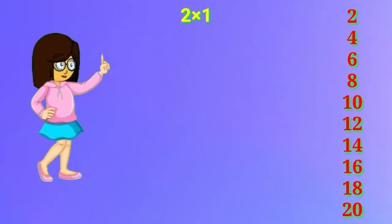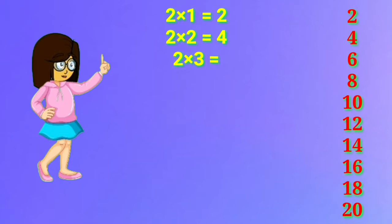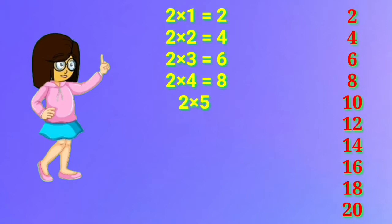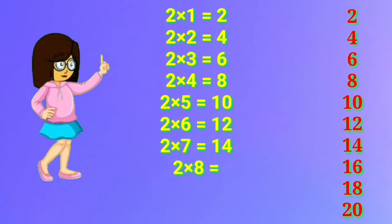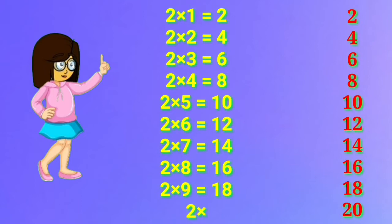2 one's are 2. 2 two's are 4. 2 three's are 6. 2 four's are 8. 2 five's are 10. 2 six's are 12. 2 seven's are 14. 2 eight's are 16. 2 nine's are 18. 2 ten's are 20.